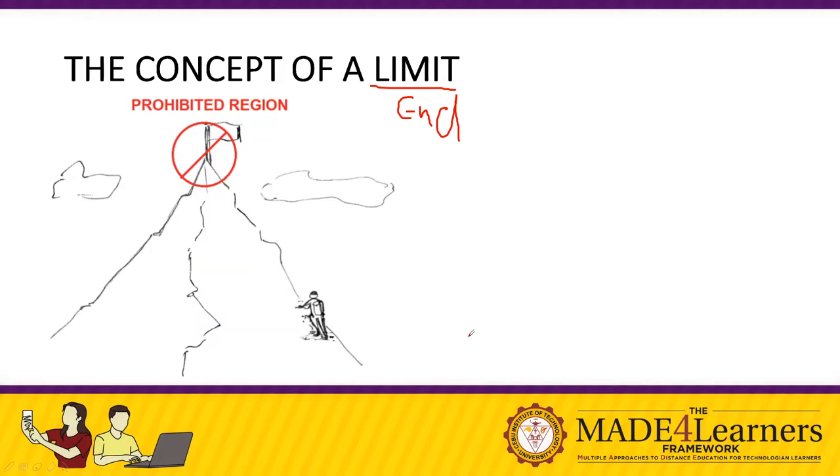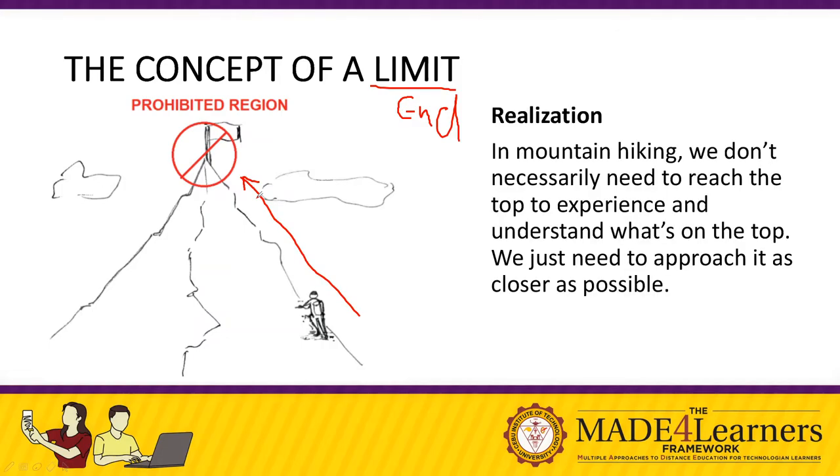The question is, how do we get to experience this notion of the mountain? How do we get the full experience of the mountain without reaching the top? The answer to this is actually very simple. We don't need to reach the top. We just need to approach the top. Oftentimes, hikers do not actually reach the peak or the most top of the mountain. They just come to the nearest region of this prohibited part.